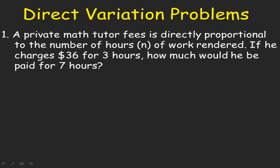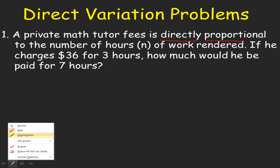Direct Variation Problems, Number 1. A private math tutor's fee is directly proportional to the number of hours of work rendered. If he charges $36 for 3 hours, how much would he be paid for 7 hours? This is a direct variation problem because of the phrase 'directly proportional.'